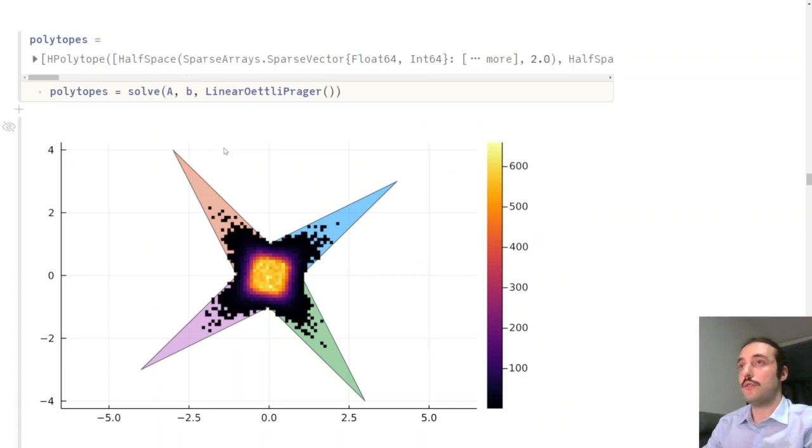Now, we solve our 2D example with Oettli-Prager. That's how we do it in the package. And we get that the solution set is this star composed by four convex polygons, one for each quadrant. And we also see that the original Monte Carlo simulation actually didn't cover the whole set, left some areas uncovered.